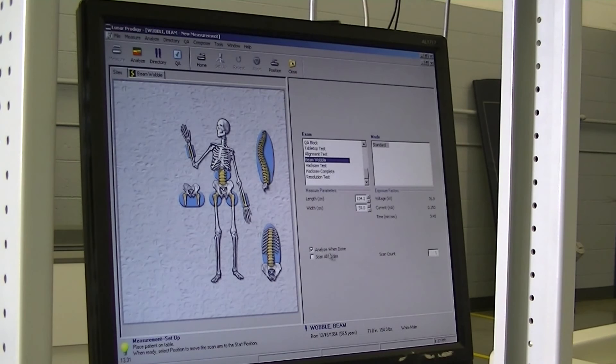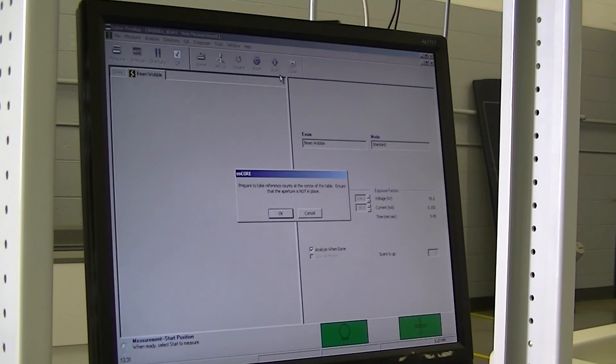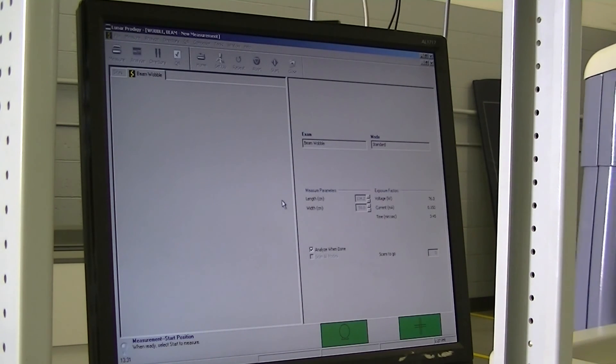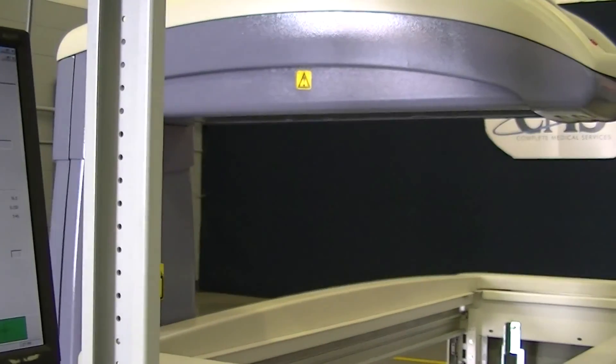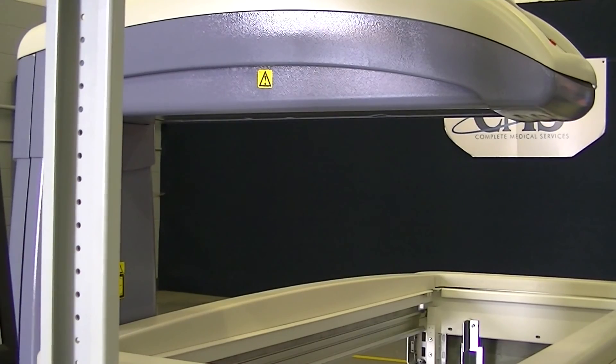To Beam Wobble Test. Make sure Analyze When Done is selected and hit Position. It wants to make sure that the alignment aperture is not in place. Make sure it is not in place. Hit OK. The arm is moving, and it's going to run the beam wobble test.